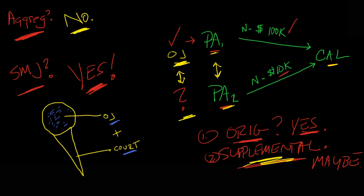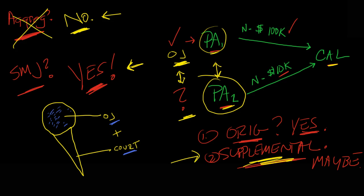Don't get too far ahead with supplemental jurisdiction — there are additional twists and turns that make it significantly more complex. But the basic takeaway from this closing hypothetical: aggregation is not possible because PA1 and PA2 are separate plaintiffs. There is subject matter jurisdiction — not because of aggregation, but because of supplemental jurisdiction. I hope this video has been helpful, and I look forward to preparing the next video for you.